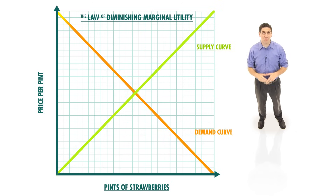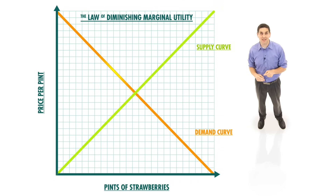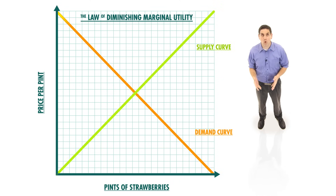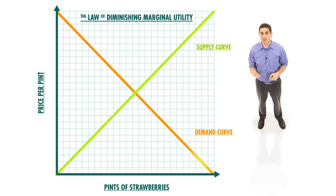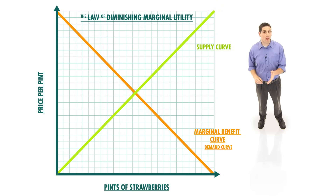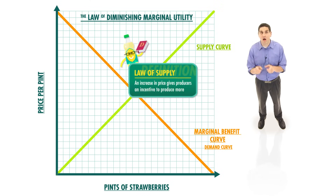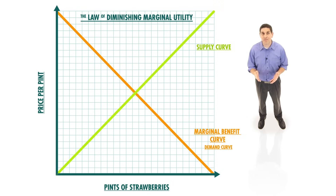The first pint of strawberries you buy gives you a lot of additional utility. The second one, maybe not as much. And the third pint, even less. And if you eat 10 pints, you're going to get sick. So, as you consume more, you're willing to pay less and less. This explains why the demand curve is downward sloping, and why it's really just a marginal benefit curve. The supply curve is upward sloping, representing the law of supply. An increase in price gives producers an incentive to produce more. It turns out that supply curves are really just marginal cost curves.